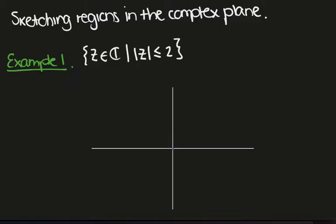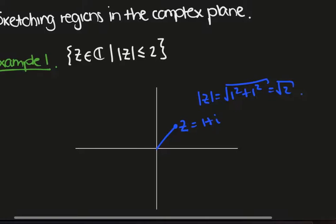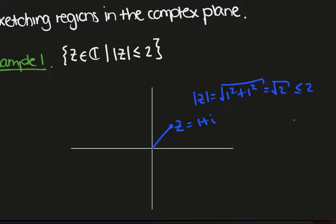Okay, so if we draw any complex number, let's say here, say that's 1 plus i, then the modulus here, recall, is 1 squared plus 1 squared, which is the square root of 2, and that's less than or equal to 2. So we want to find all such complex numbers. We just satisfy this.